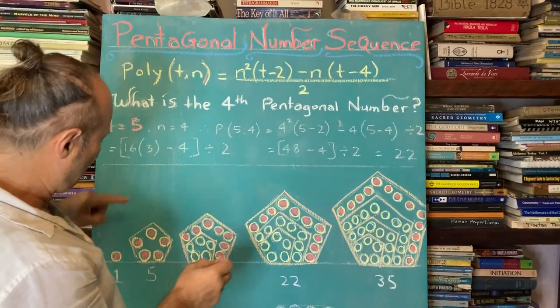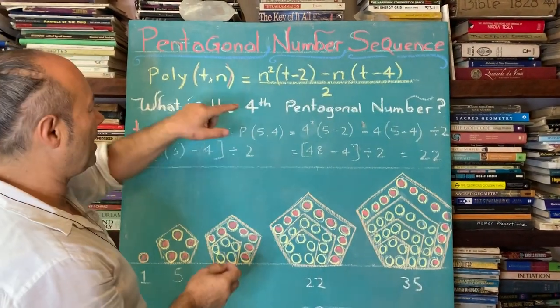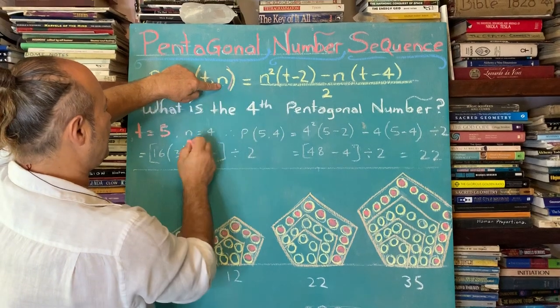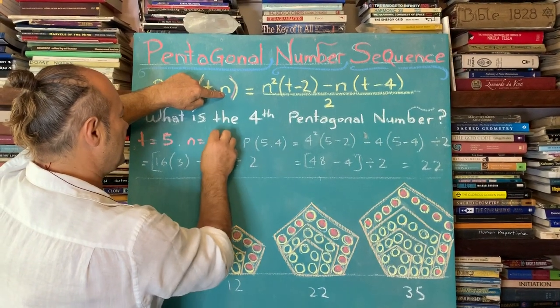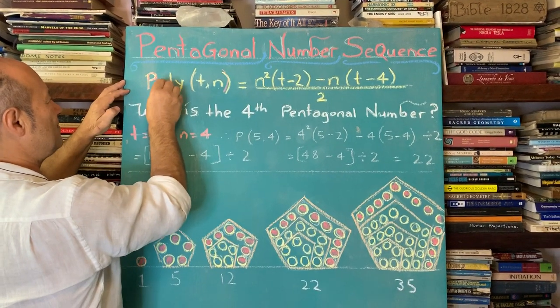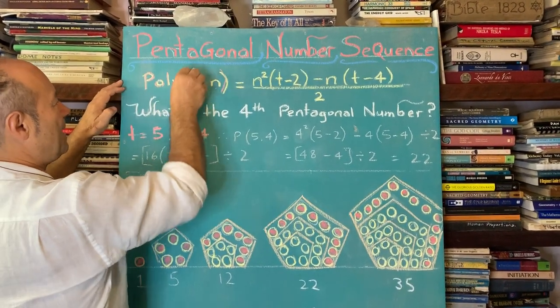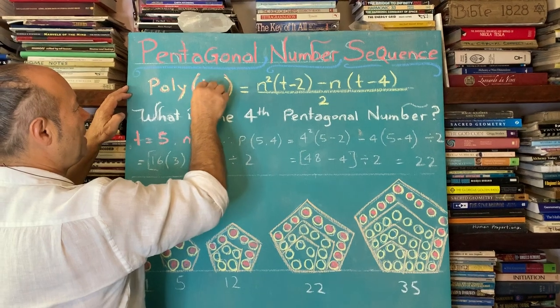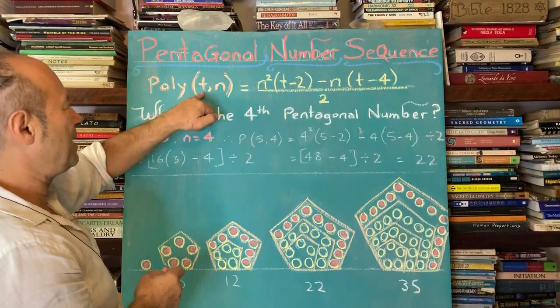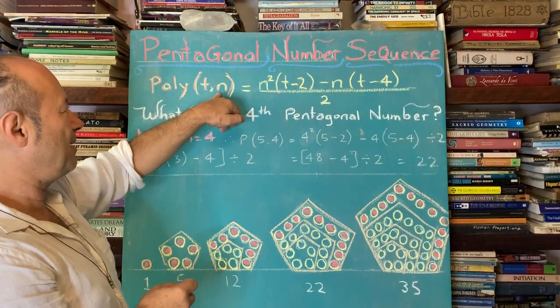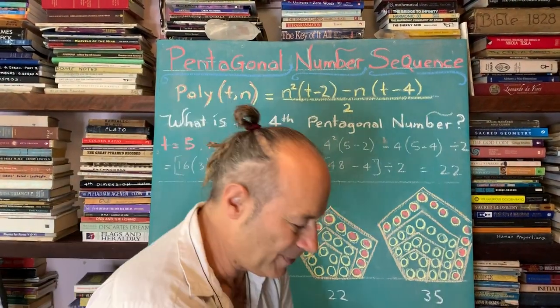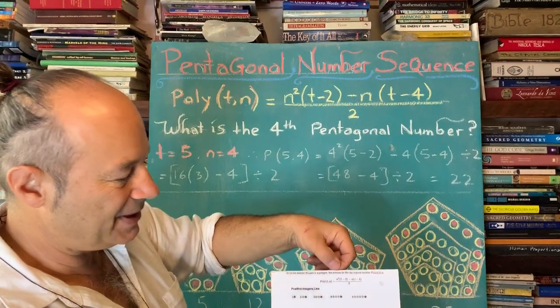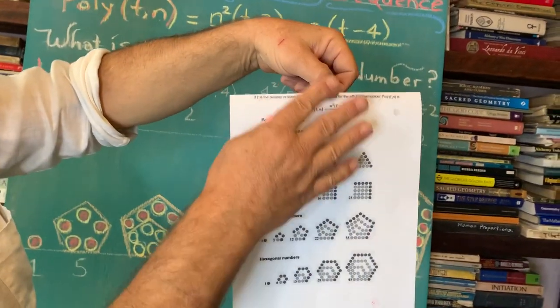But because we want to know the fourth number, that's the N bit here. So we're going to say T equals five, but the N equals four. So for any universal number, we're going to say poly TN means what shape is it and what is the tenth number or the twelfth. And so this is the formula, which came from this chart here, submitted by some readers.